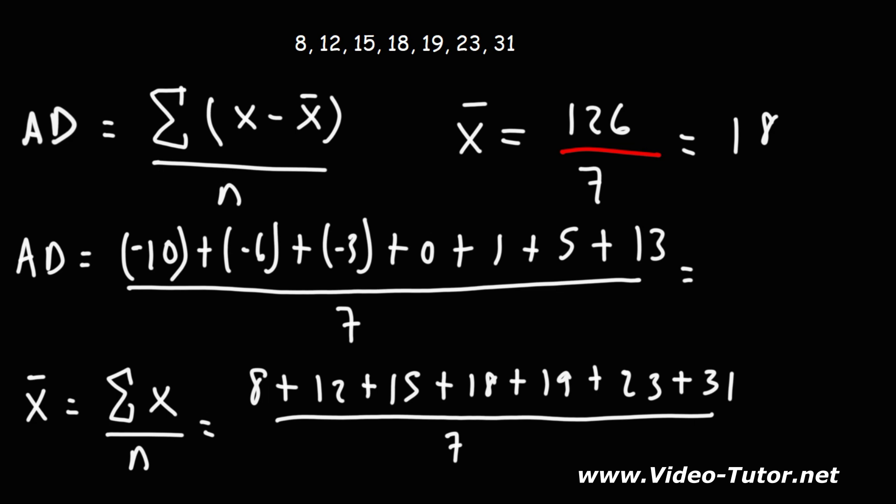So notice that negative 6 cancels with 1 and 5. 1 plus 5 is 6, and negative 6 cancels with that. Negative 10 and negative 3, that's negative 13, which cancels with 13. So this turns out to be 0. That is the average deviation of this particular data set.